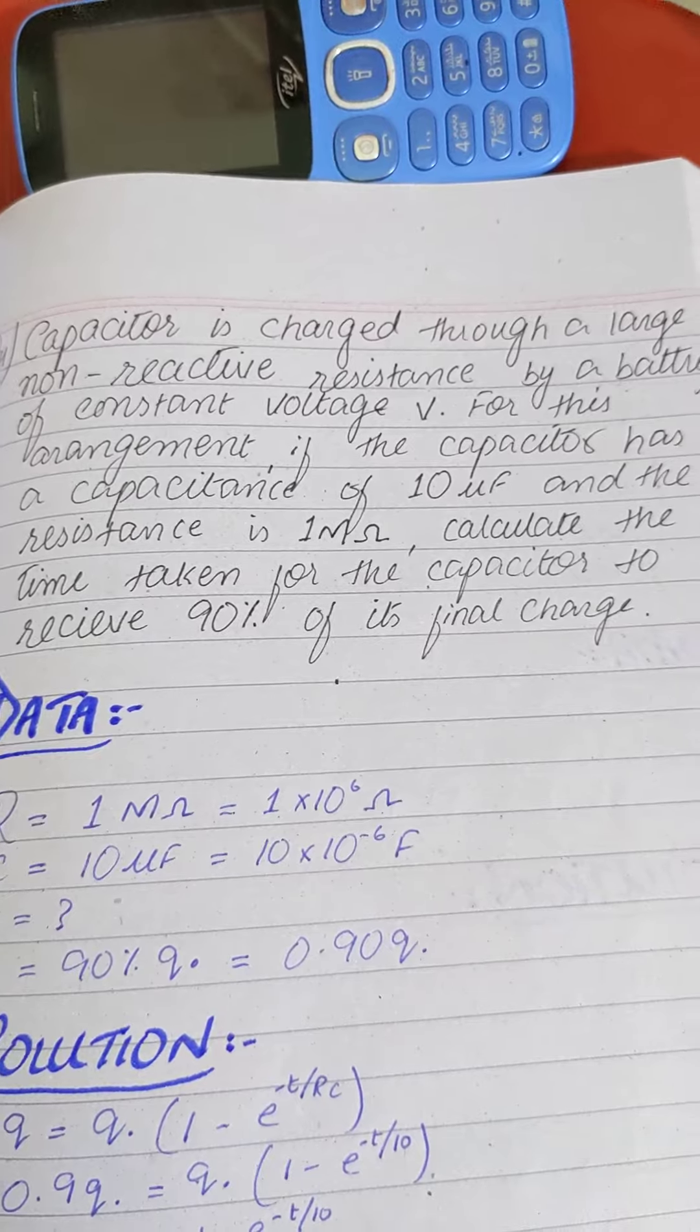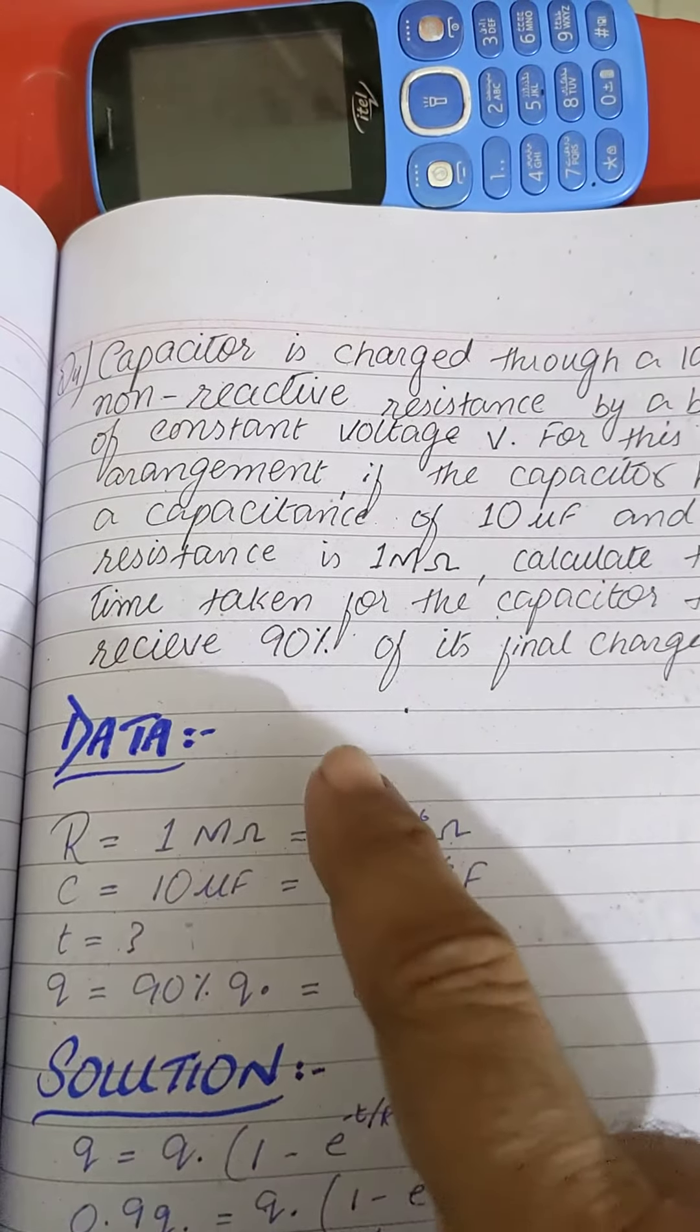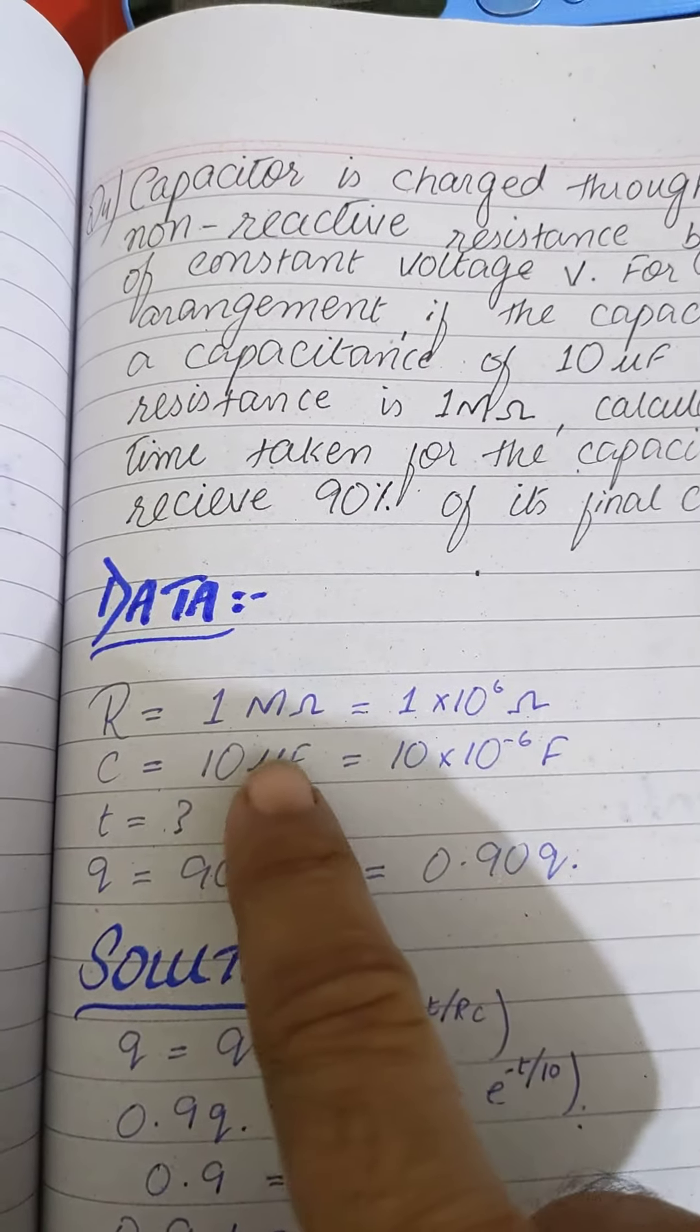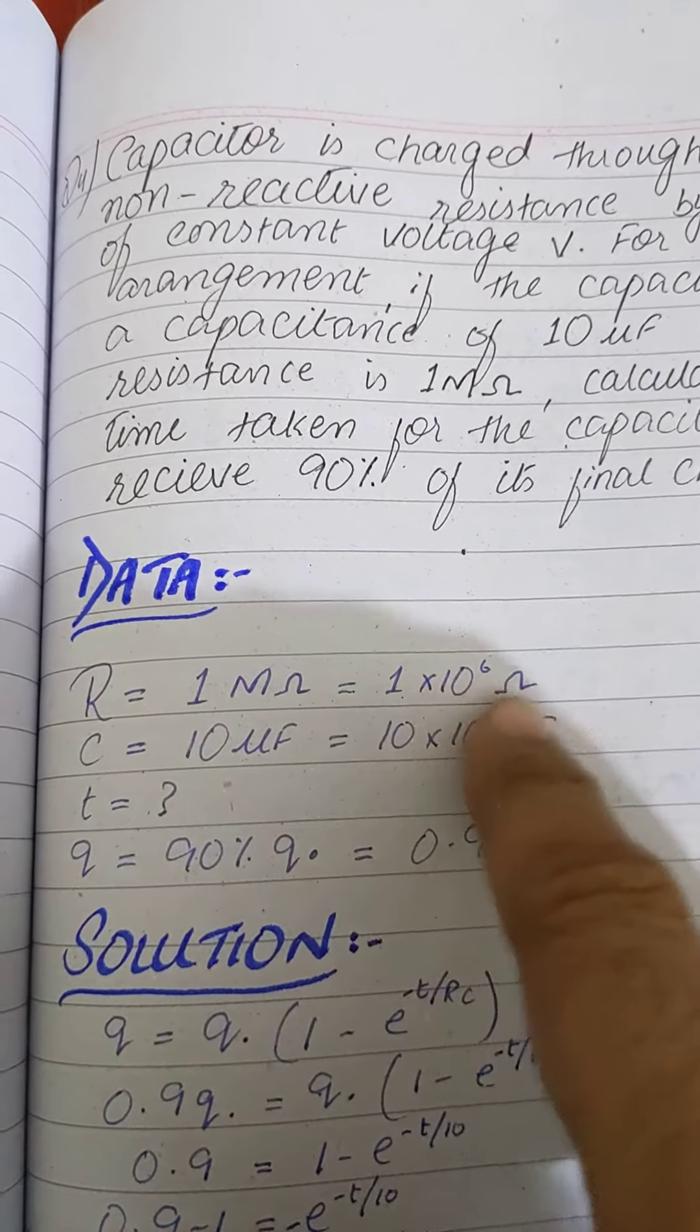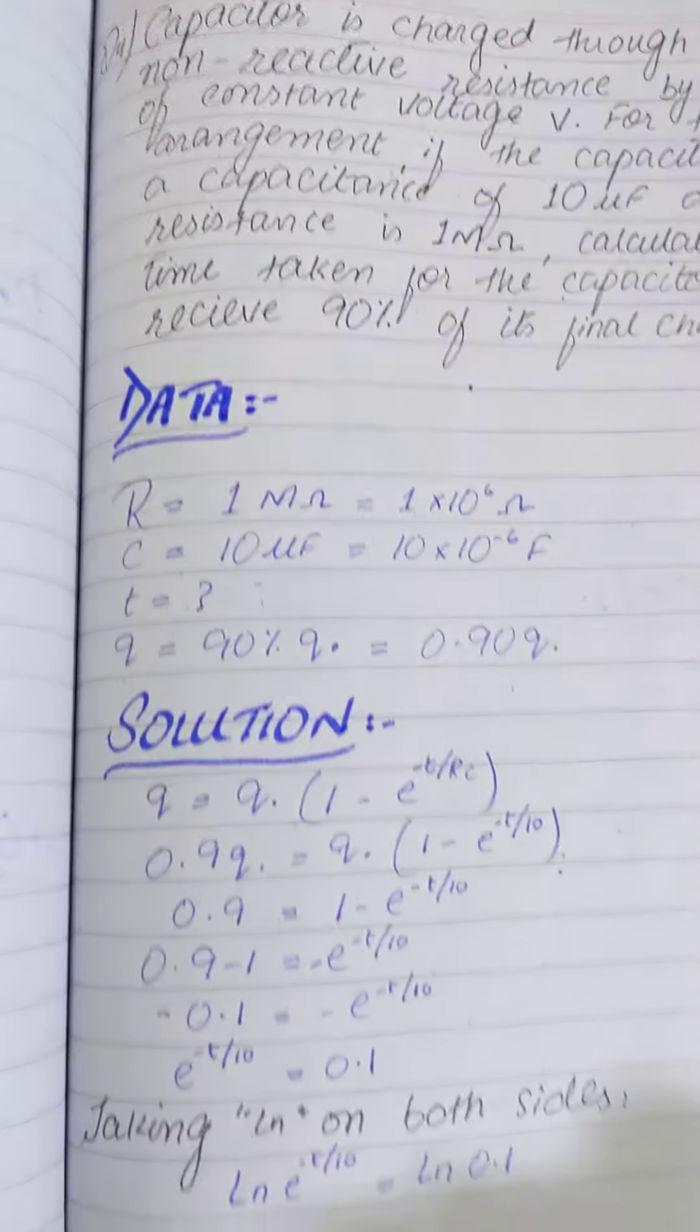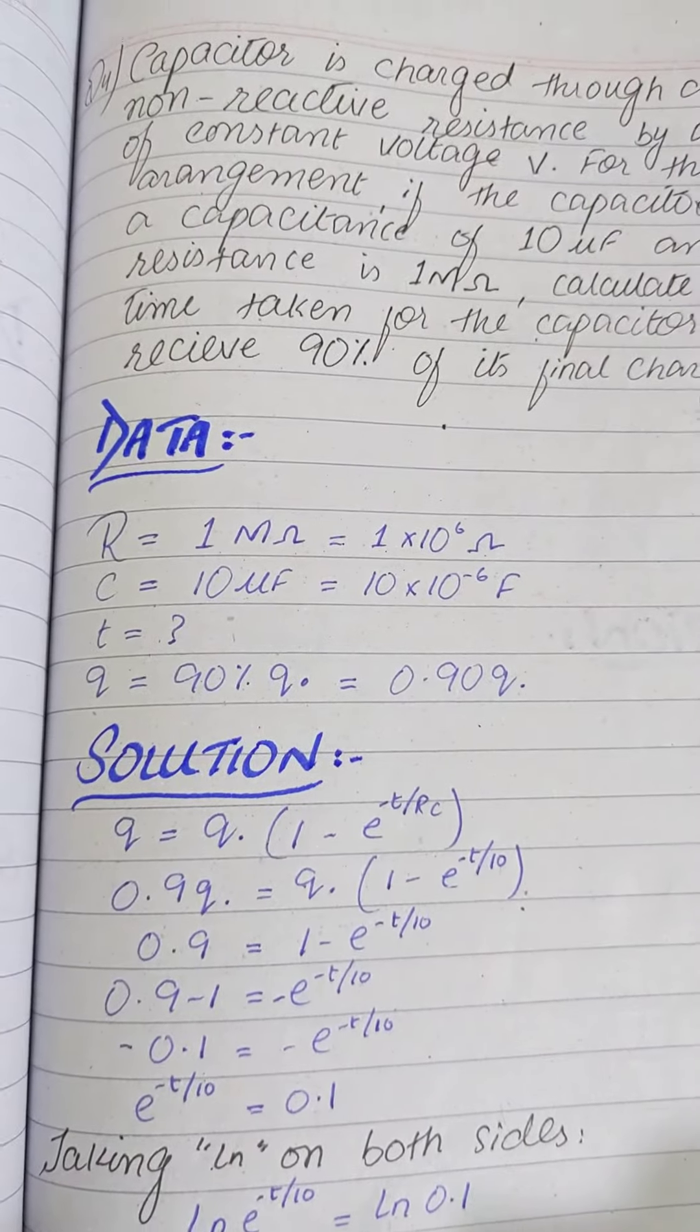Now this value is 1 megaohm, 10 microfarad which is 10 into 10 to the minus 6. The Q value is 90%.